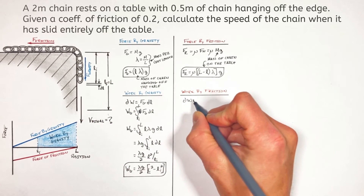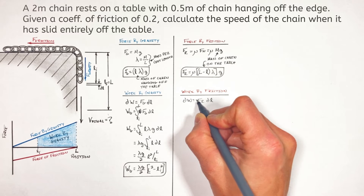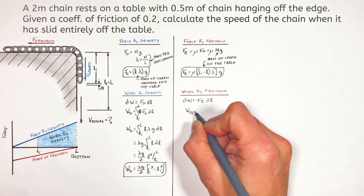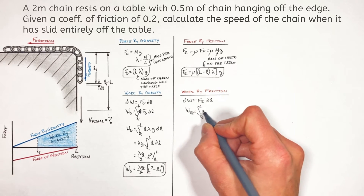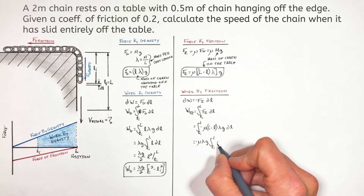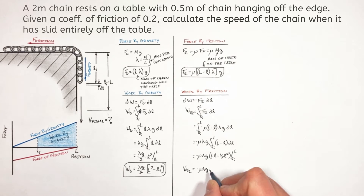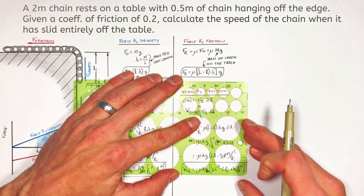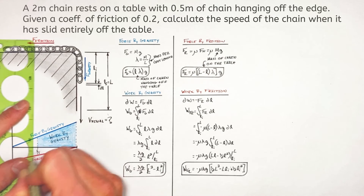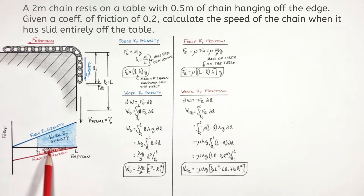Next, looking at the work by friction: we allow the friction force to act over a very small distance dl. These forces are in opposite directions, so there's a negative sign. Adding up all those little works done by friction — the infinite sum — we again have constants mu, lambda, and g. Make sure to be careful with the distribution of negatives when evaluating this integral. We're left with a function that, while it looks pretty ugly, is nothing other than the area under the curve of the force by friction graph.